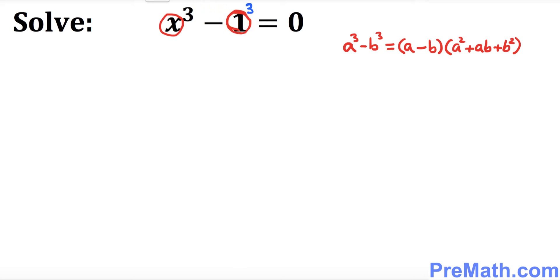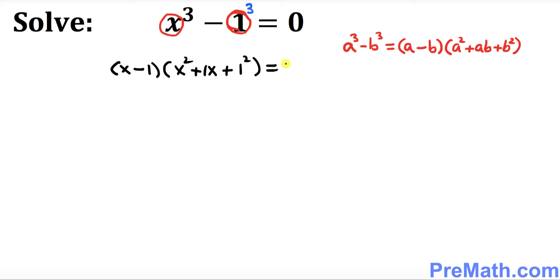So we can write this as (x minus 1) times (x squared plus 1 times x, which is x, plus 1 squared) equals 0. Or we can simplify a little bit: (x minus 1)(x² plus x plus 1) equals 0.